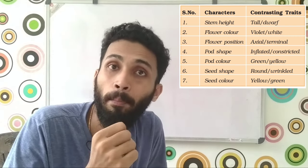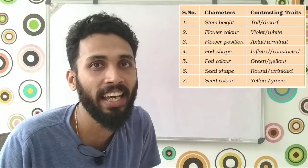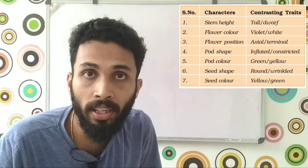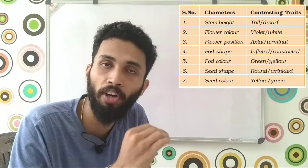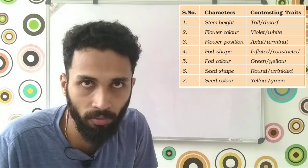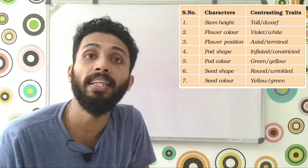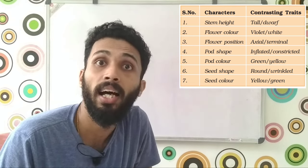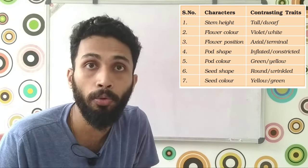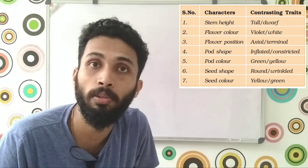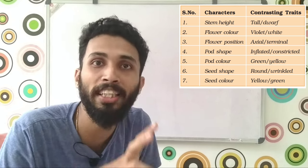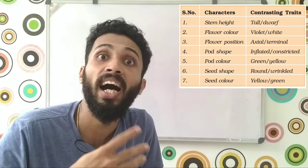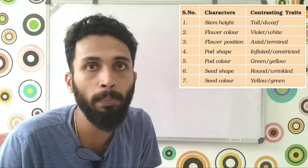Because of stem height, it can be added to dwarf traits. If we have a seed shape, it can be added to a ring and a round trait. That's why we have 14 types of P-plants.